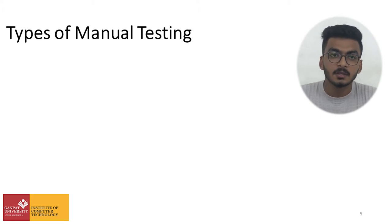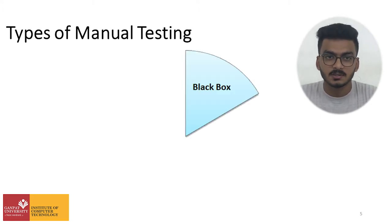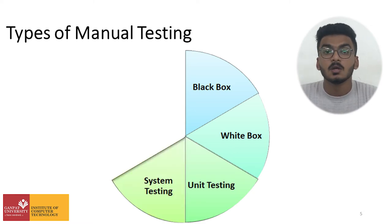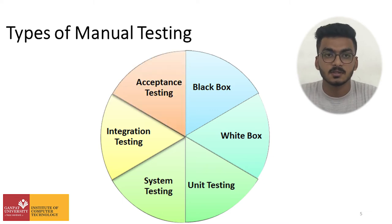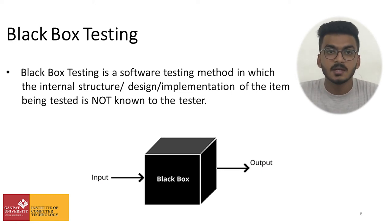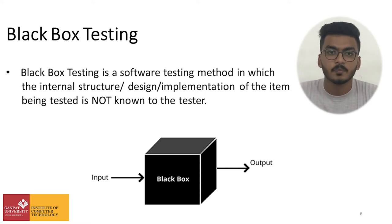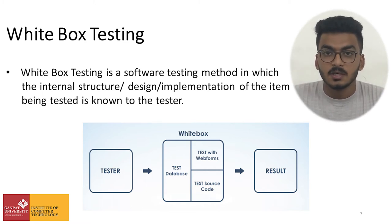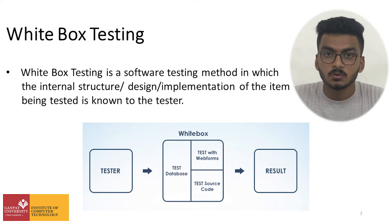The next point is types of manual testing. The first is black box testing, second is white box testing, next is unit testing, then system testing, and the last two are integration testing and acceptance testing. Black box testing is a software testing method in which the internal structure, design, and implementation of the item being tested is not known to the tester. In white box testing, the internal structure, design, and implementation of the item being tested is known to the tester.